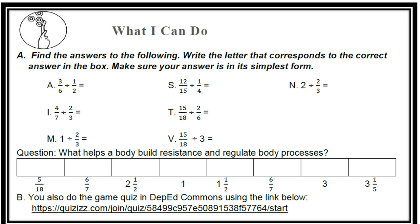Test A: Find the answers to the following. Write the letter that corresponds to the correct answer in the box. Make sure your answer is in its simplest form. Letter A: 3/6 divided by 1/2. Letter A: 4/7 divided by 2/3. Letter M: 1 divided by 2/3. Letter S: 12/15 divided by 1/4. Letter T: 15/18 divided by 2/6. Letter V: 15/18 divided by 3. And Letter N: 2 divided by 2/3. For Quiz B, you may also do the game quiz using the link in your module if you have internet access.